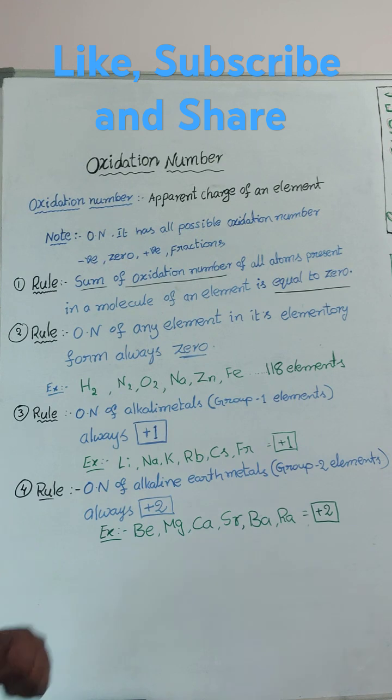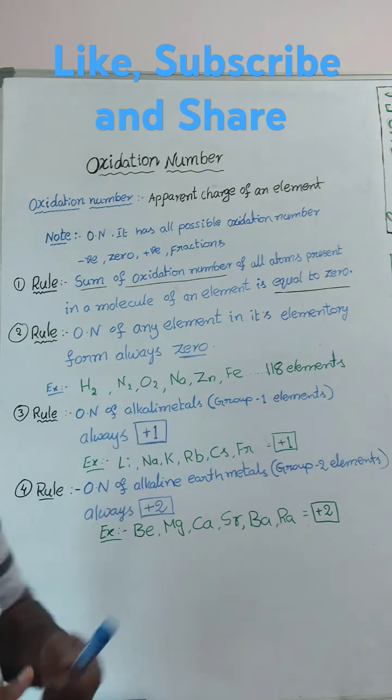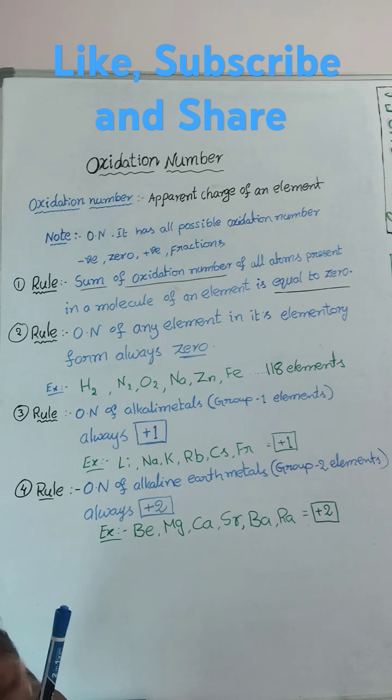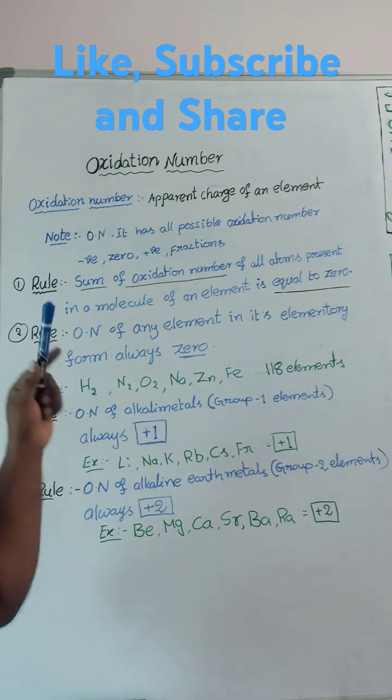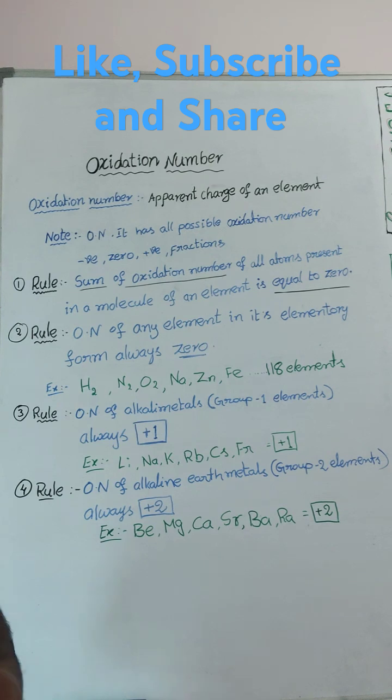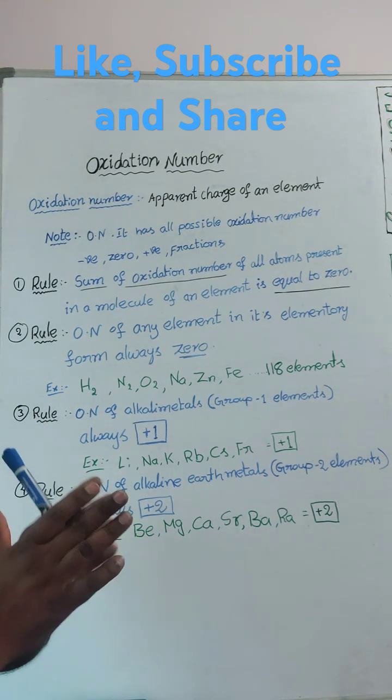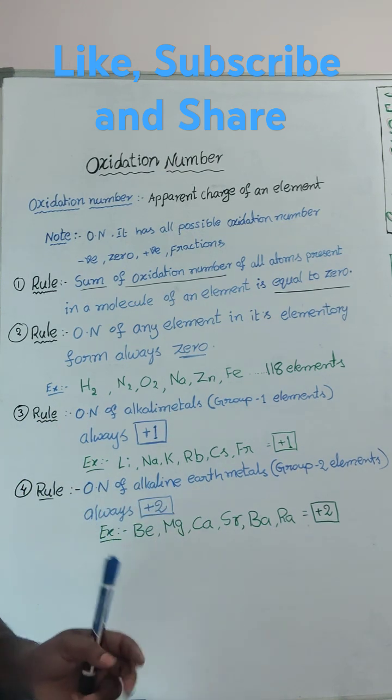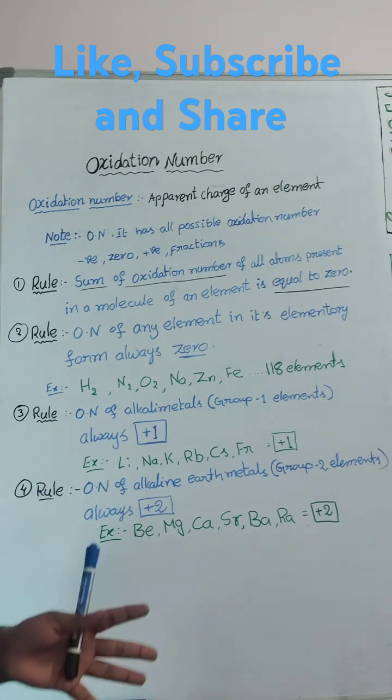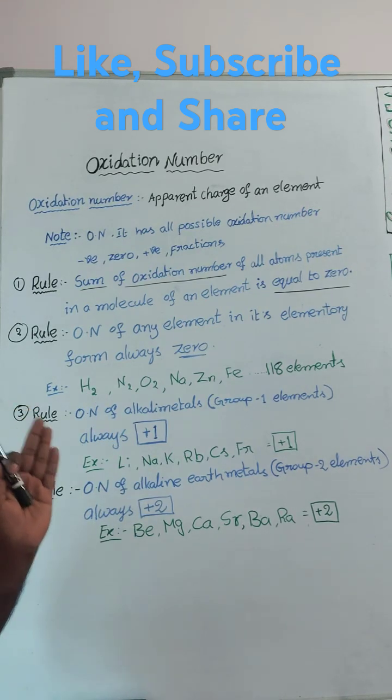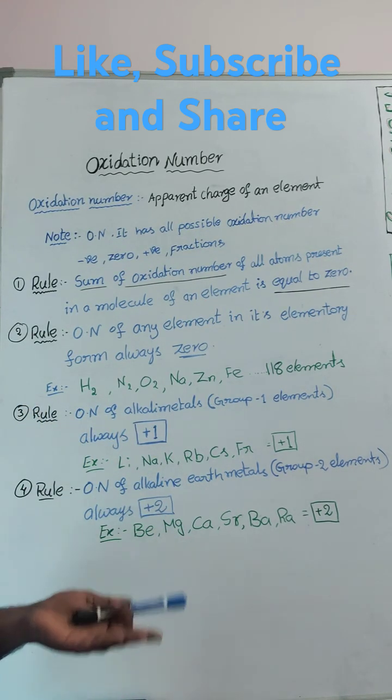Today rule 2: oxidation number of any element in its elementary form always 0. Then, that element are there just without participating in any chemical reaction, that is we said just elementary form. That oxidation number always 0, okay, because no loss, no gain.